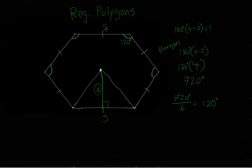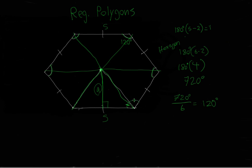Let's say we have some side length s. We have a triangle here we're working with. Looking at the other triangles — all these triangles are congruent, so the 120-degree angle is split evenly. This means the angle on each side of the split is equal, and since the whole thing is 120 degrees, each half is 60 degrees.